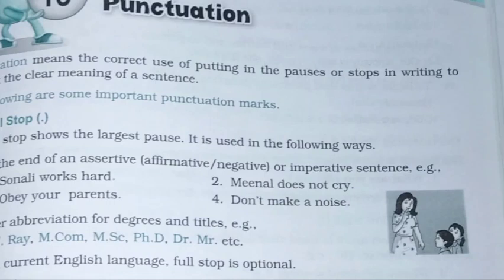At the end of an assertive, affirmative, negative, or imperative sentence — meaning when you are commanding, requesting, ordering something, or saying a general statement in either positive or negative sense — the use of a full stop is required. For example: 'Sonali works hard.' Here the sentence is being completed, therefore we need to end it by putting a full stop. 'Meenal does not cry.' Here also is a negative sentence.